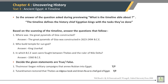Decide if the given statements are true or false. Thutmose I began military campaigns that annexed Nubians into Egypt — the statement is true. Tutankhamen restored Thebes as the religious capital and Amun-Ra as the chief god of Egypt — the statement is true.